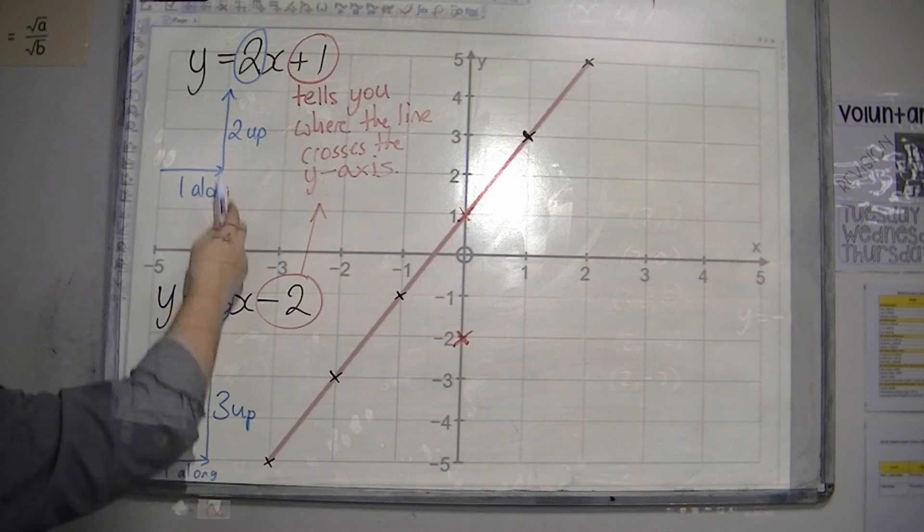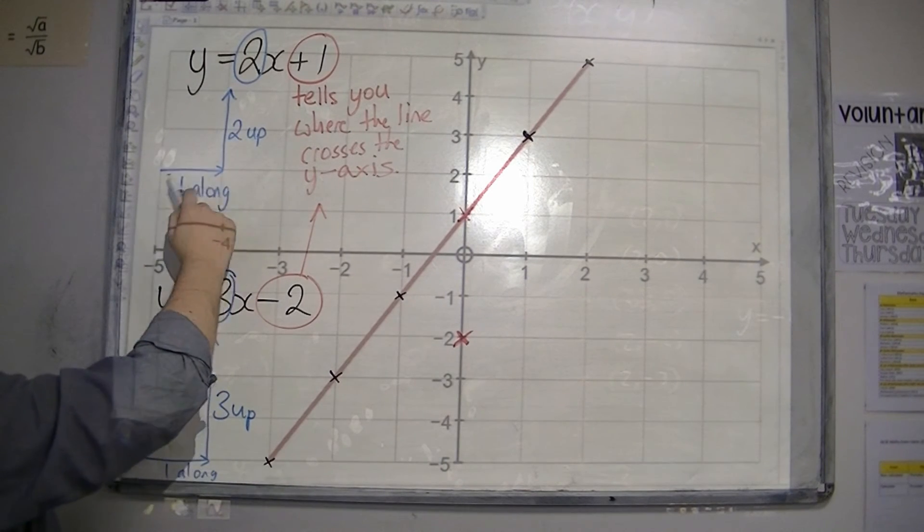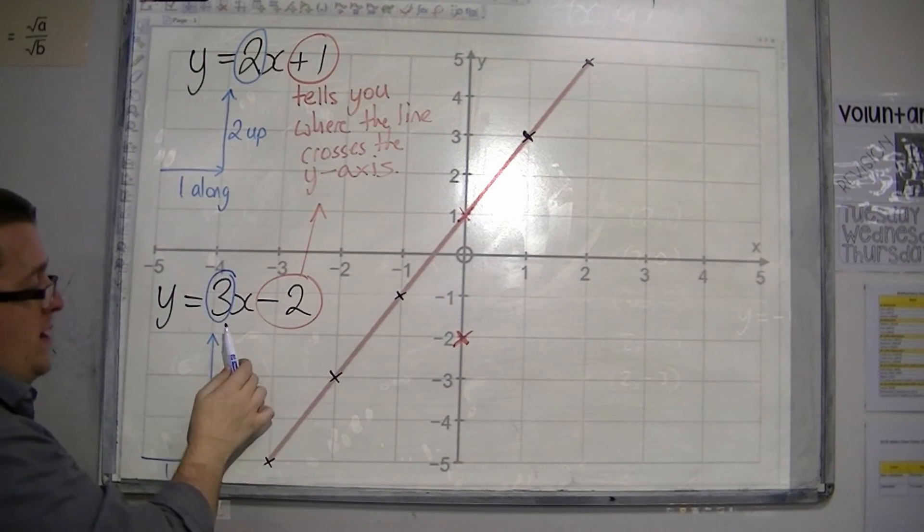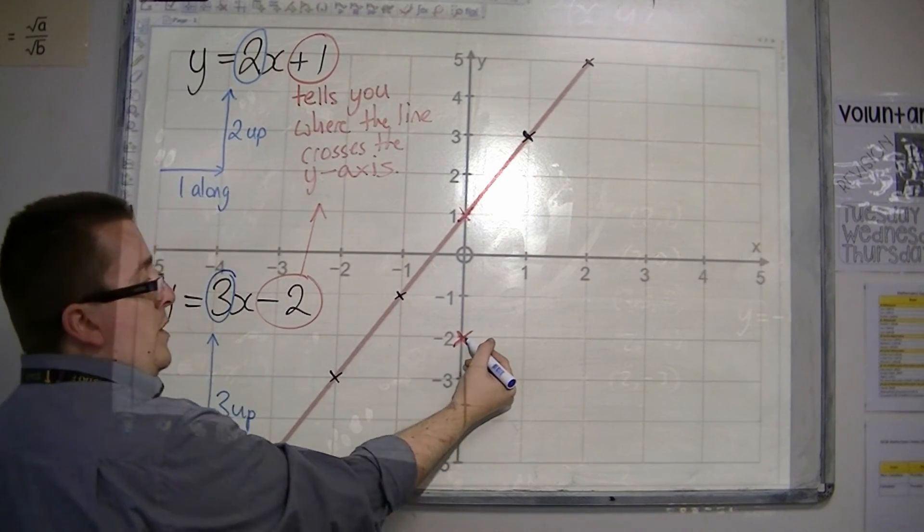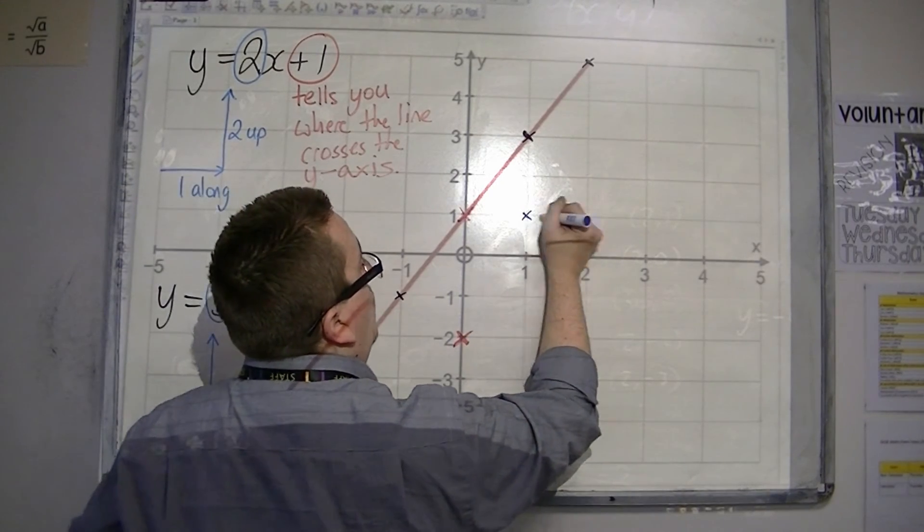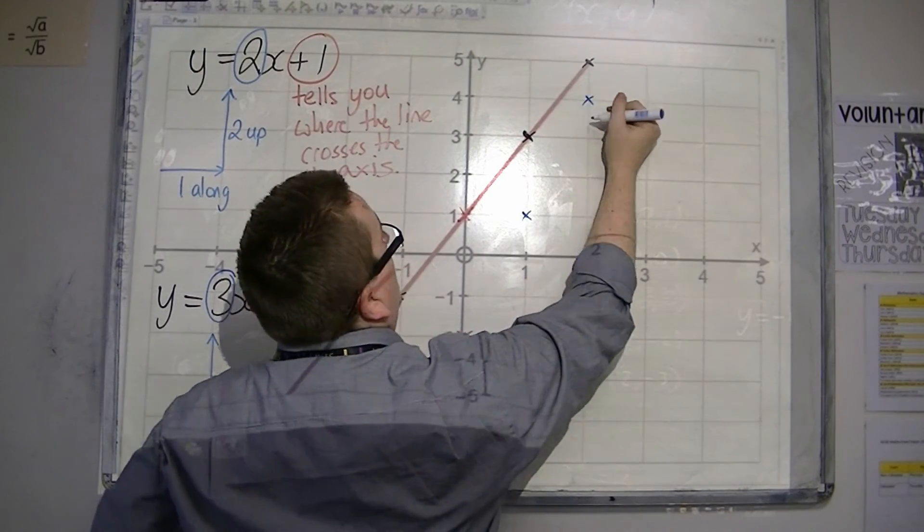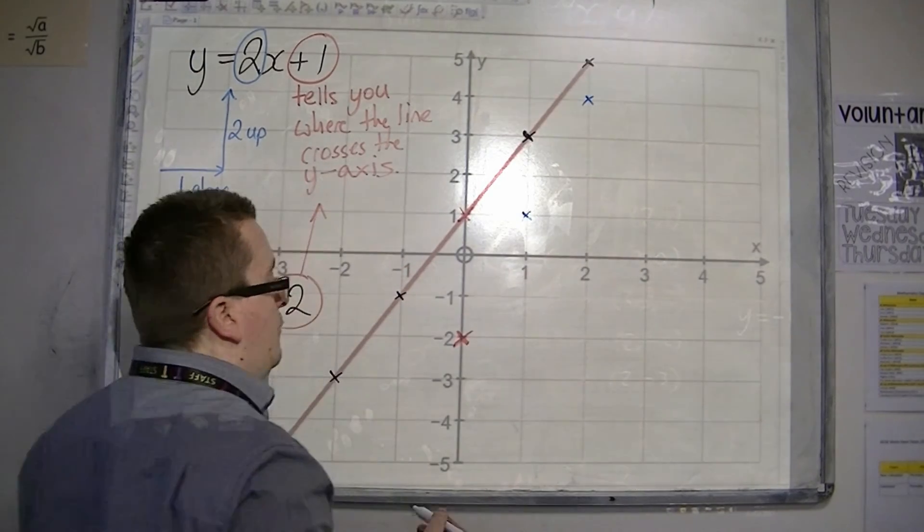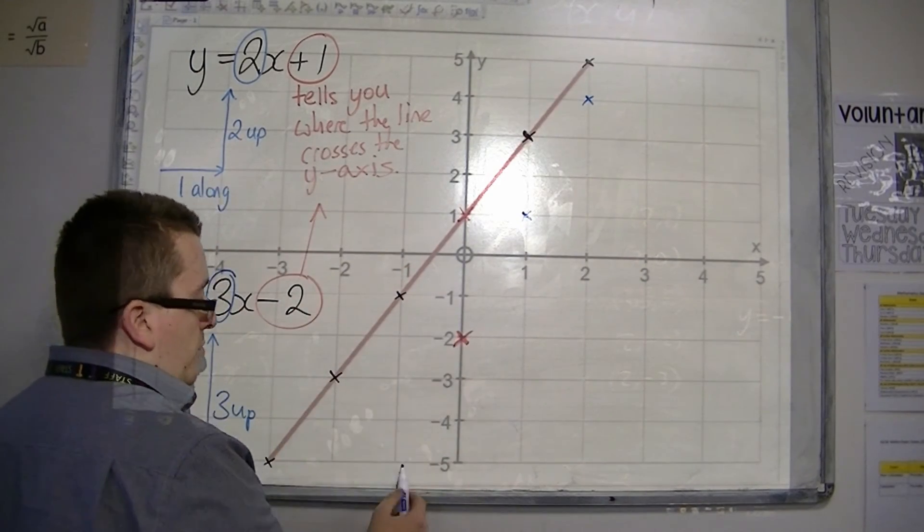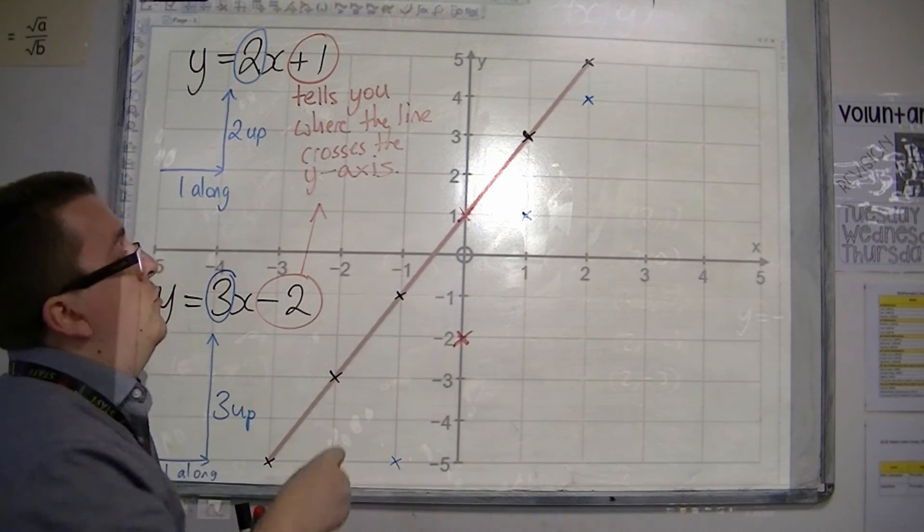And the 3 tells me that for every 1 along, I should be going up 3. So instead of doing 2 here, 1 along 2 up, I'm going 1 along 3 up. So from that point, 1 along 3 up, 1 along 3 up, and I can't do the next point because it's too far up. And 1 along 3 down just to fill out the graph.